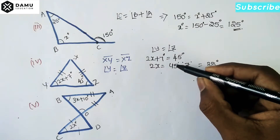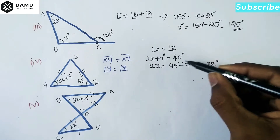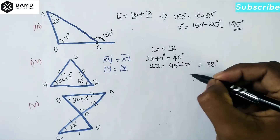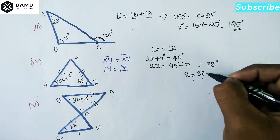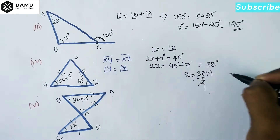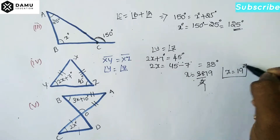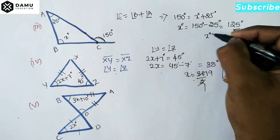From 45 we subtract 7: first subtract 5, then 2, giving 38. So X equals 38 divided by 2, which equals 19 degrees. That gives us X equals 19 degrees for the second case.